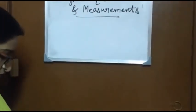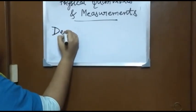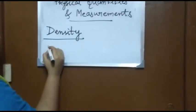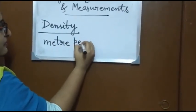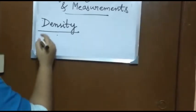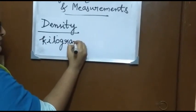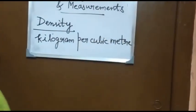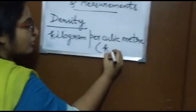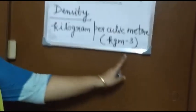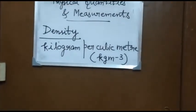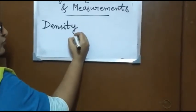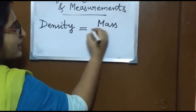Now let's discuss about density. Density is the mass per unit volume. The SI unit of density is kilogram per cubic meter. The mathematical expression is: density = mass / volume. If the volume remains the same and two objects have different masses, the object with more mass will have more density.